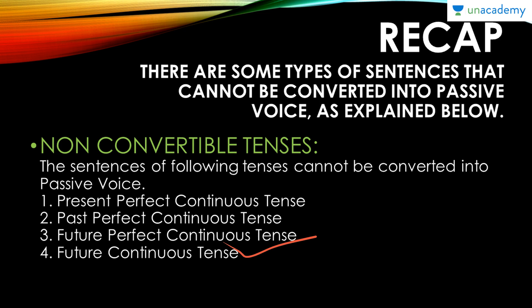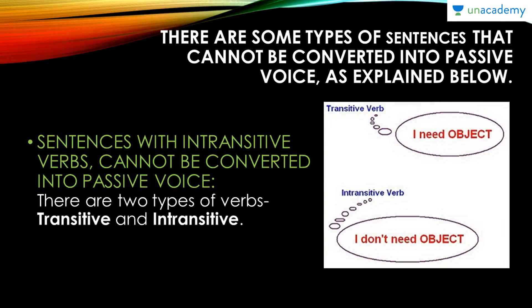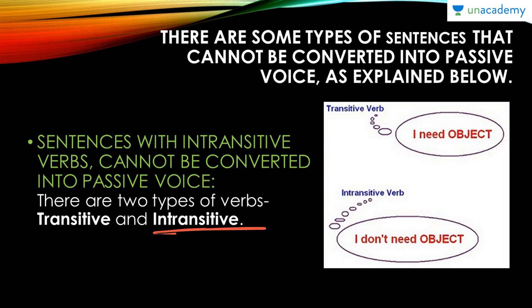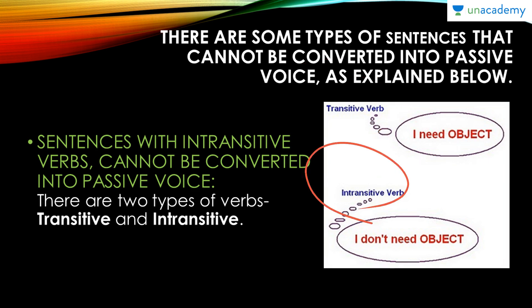Let's go to the next point now. Sentences with intransitive verbs cannot be converted into passive voice. There are two types of verbs: transitive and intransitive. So I was very verbal about my explanation in the previous module about transitive and intransitive verbs, and I didn't use any visual aids. So I will be explaining these two types of verbs in detail with visual aids. A transitive verb needs an object in the sentence; an intransitive verb doesn't need an object.